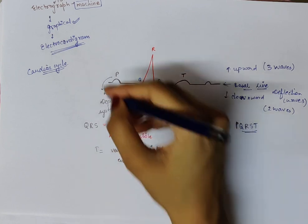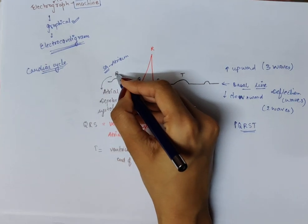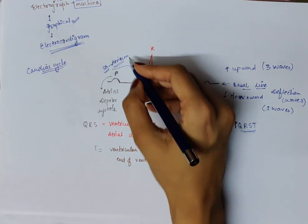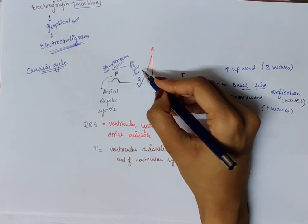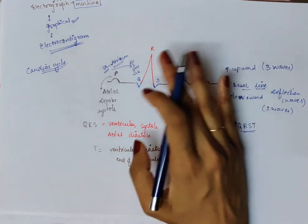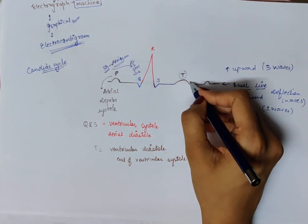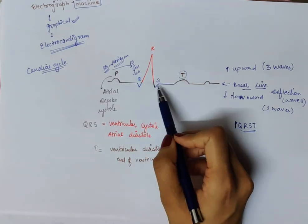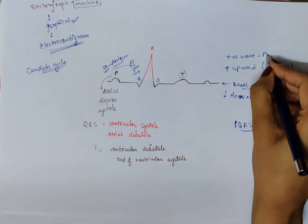So to summarize what happened: the SA node gave the message to the atrium to contract, which generated the P wave. From P to Q, the message was transported from the SA node to the AV node, and from the AV node to the bundle of His. The bundle of His gave the message to the ventricles to contract, shown in the QRS wave. After that, the ventricle comes back to the relaxed condition, shown by the end of the T wave.